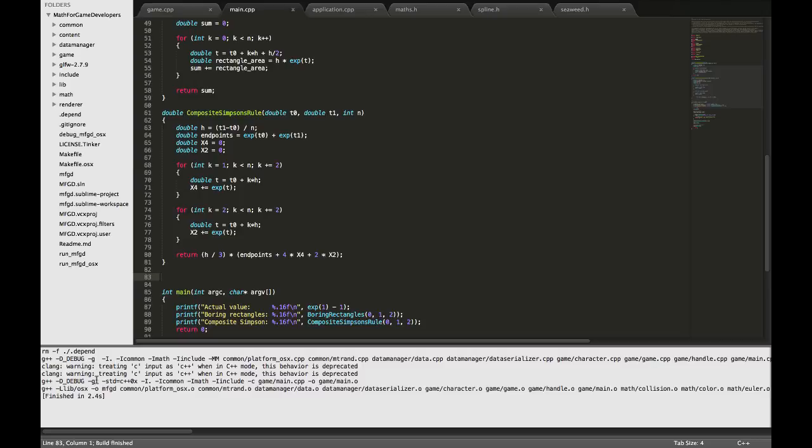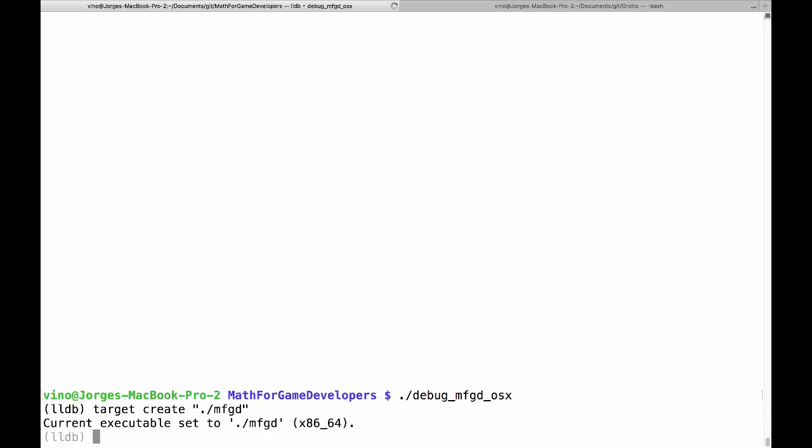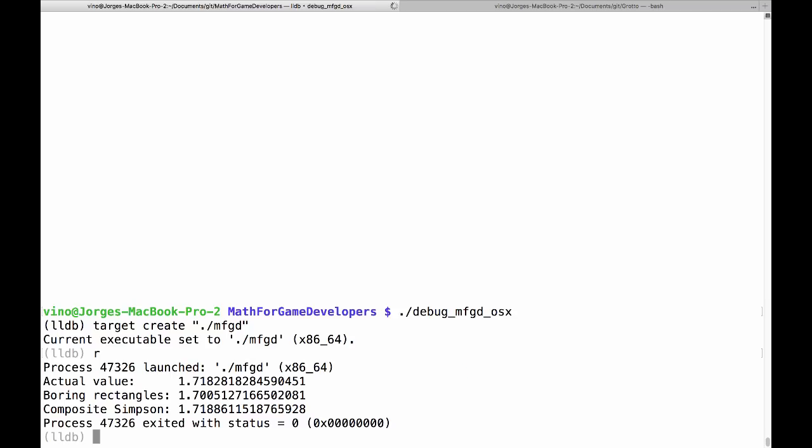So let's compile that. Does it compile? Yes. Here we go. We're going to run the debugger. Let's just run the program and see what it does. So first I print out the actual value. Here it is. This is E minus one, the constant, E minus one. So that is 1.71828182828.